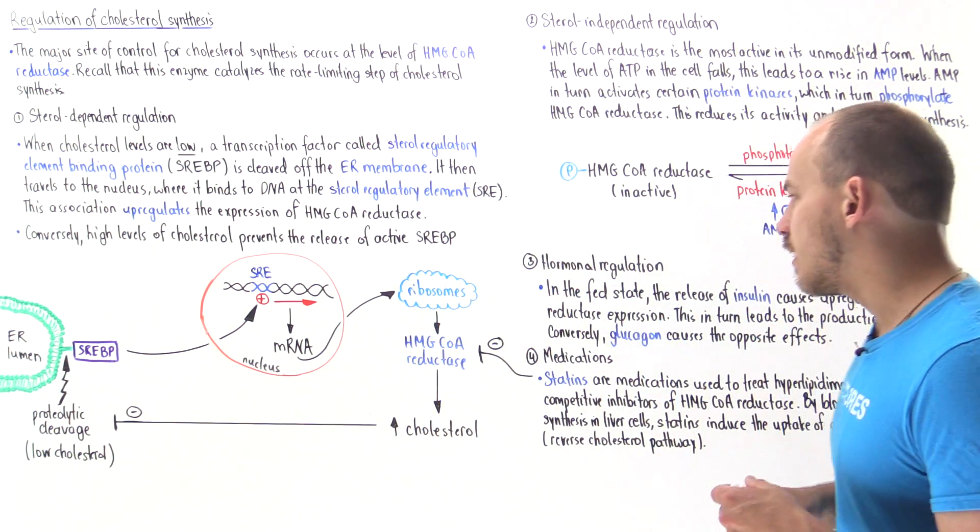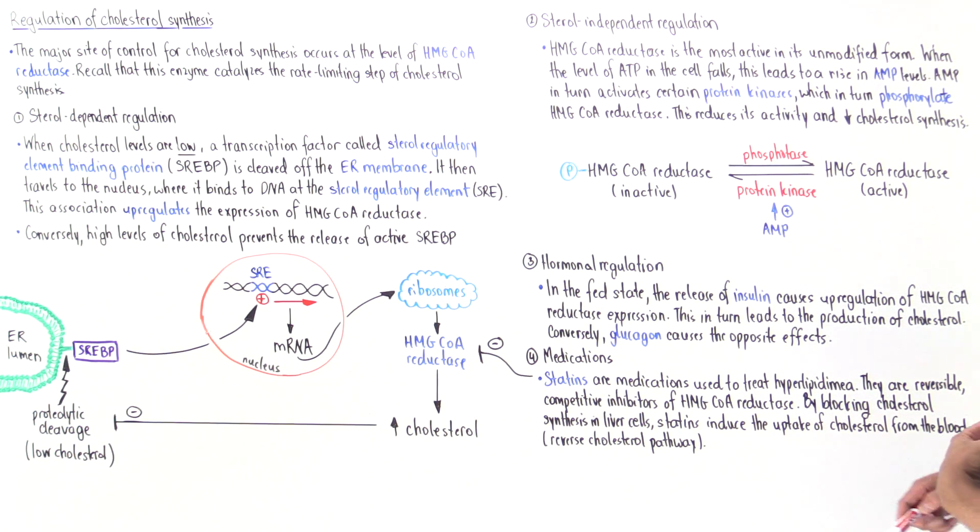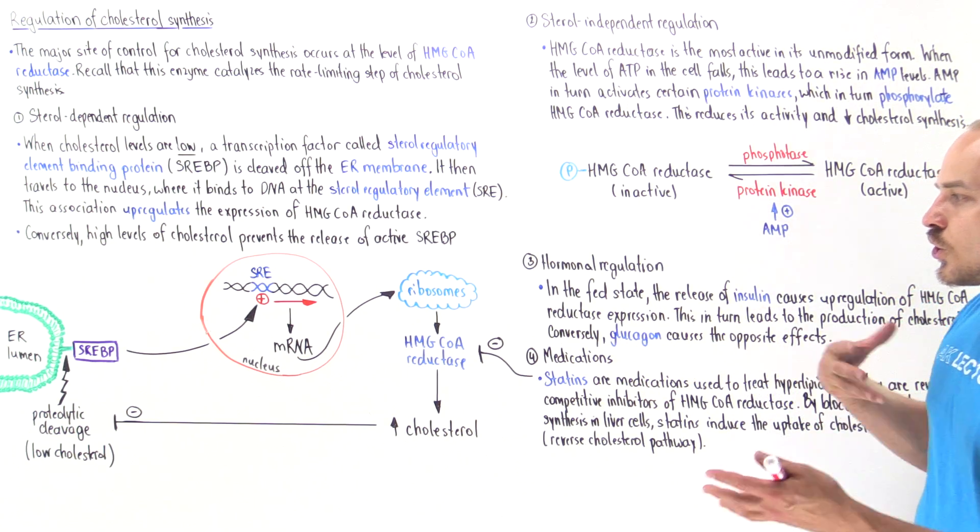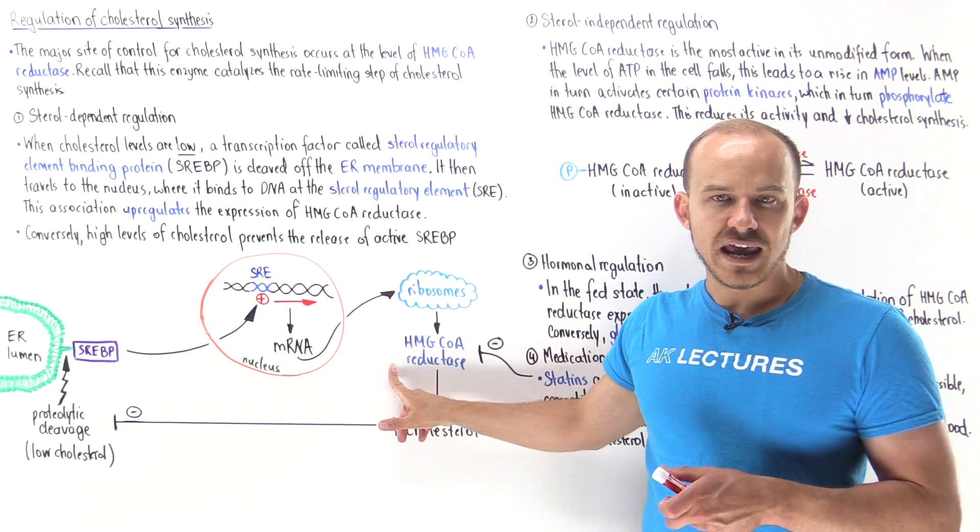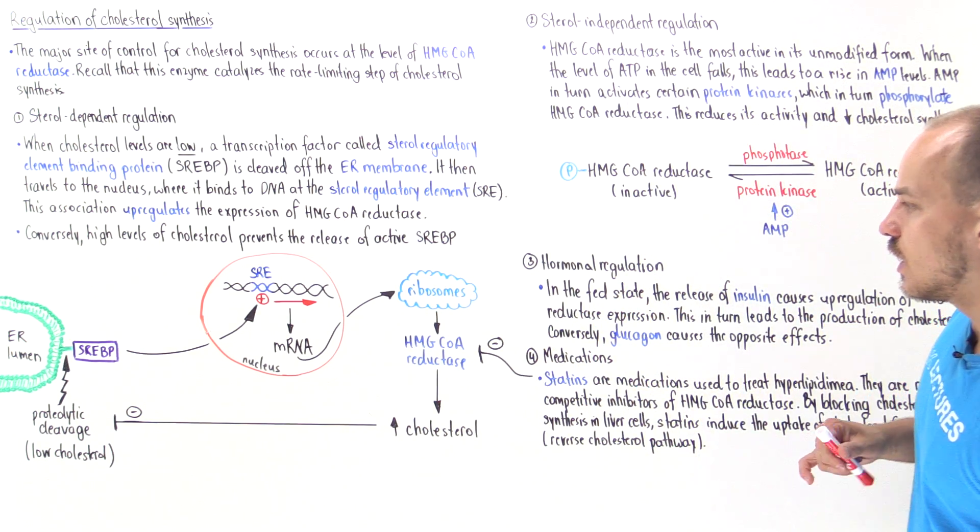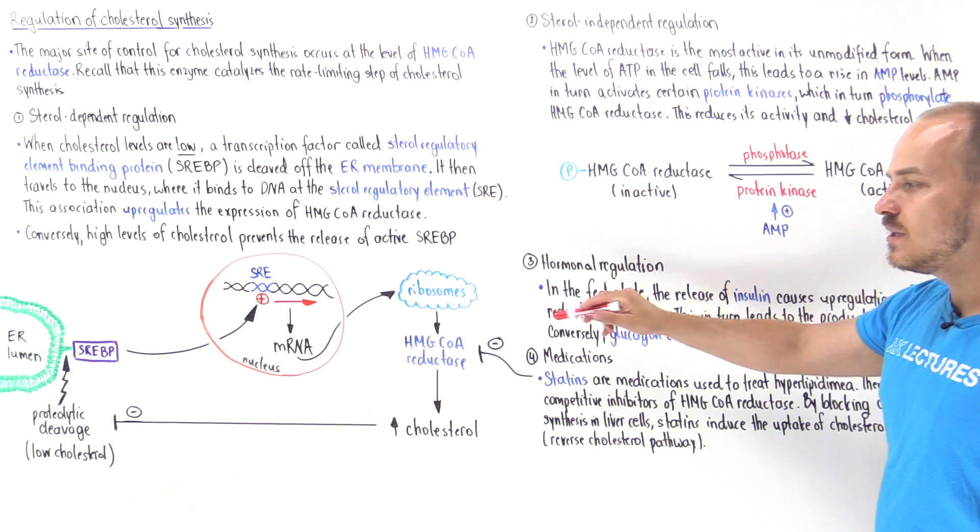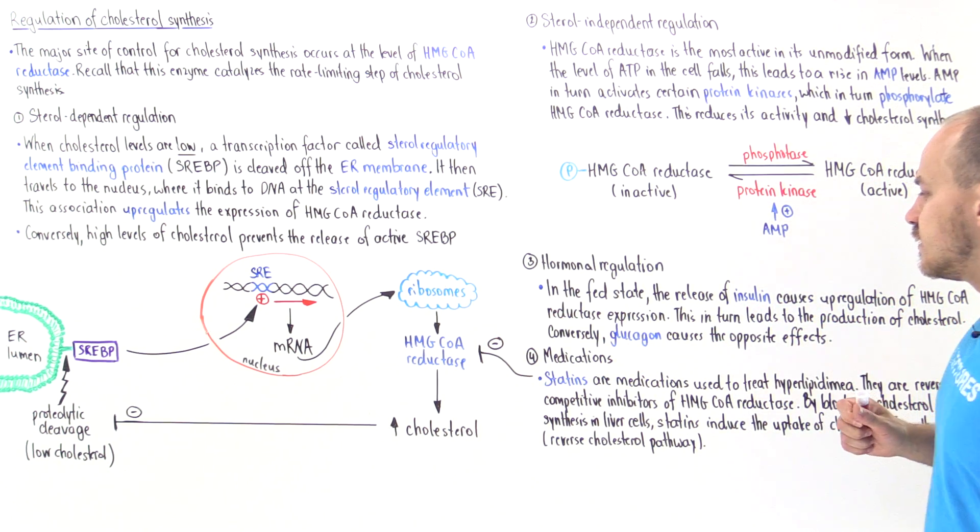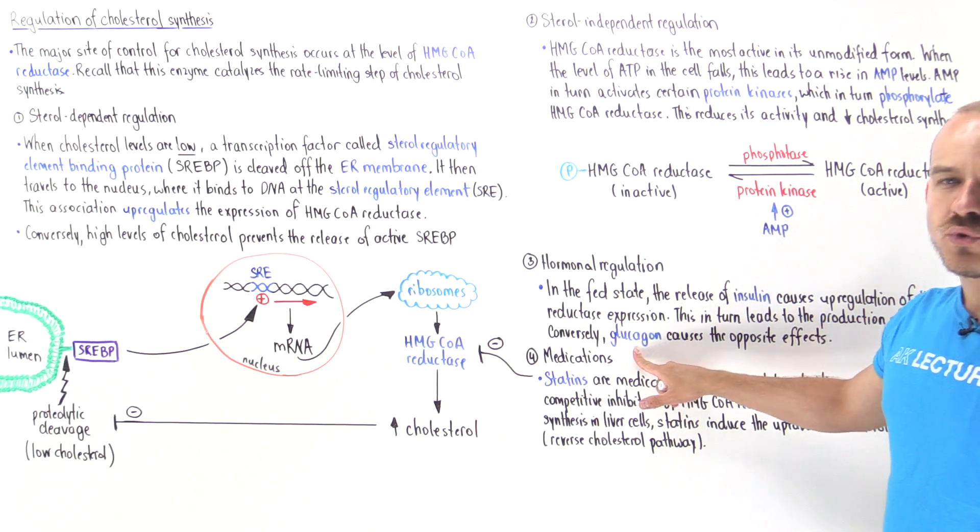Conversely, if we're in a fasting state, then glucagon levels are high. This will turn off the expression of HMG-CoA reductase, thereby decreasing the production of cholesterol. So insulin stimulates the synthesis of cholesterol, but glucagon decreases it.